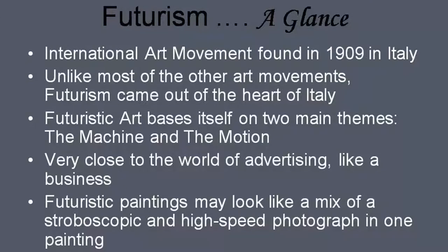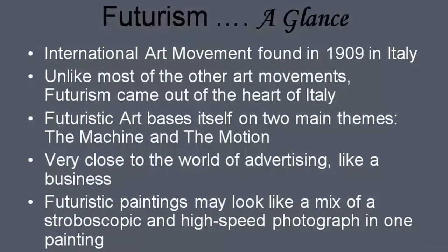At a glance, the main characteristic features of Futurism are these. First, it was an international art movement. Futurism was started in Italy in 1909, but soon became an international art movement. Unlike most other art movements, Futurism came out of the heart of Italy, whereas Cubism was based in Paris. Both Impressionism and Post-Impressionism movements were also based in Paris, as was Realism and even Romanticism to some extent. But Futurism came out of the heart of Italy.